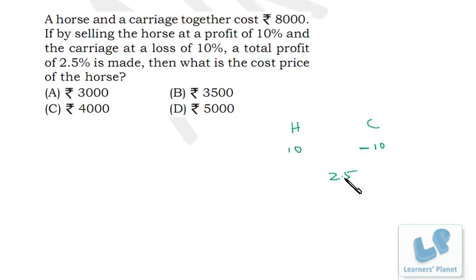This data is lying somewhere in between. While we use allegation method, one data should be bigger and one data should be smaller from this quantity. From the bigger data we find out the difference.